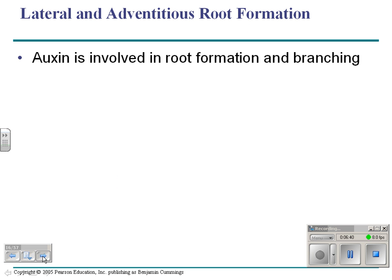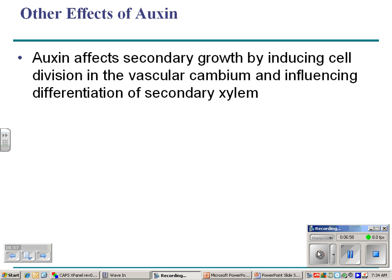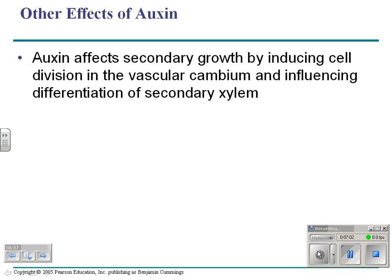Auxin is also involved in root formation and branching. If you overdose plants with auxin, they can be killed — just like in humans it's possible to have an insulin overdose, it's possible to have an auxin overdose for plants. Auxin also helps secondary growth because it makes the vascular cambium — which produces secondary growth — induce cell division.